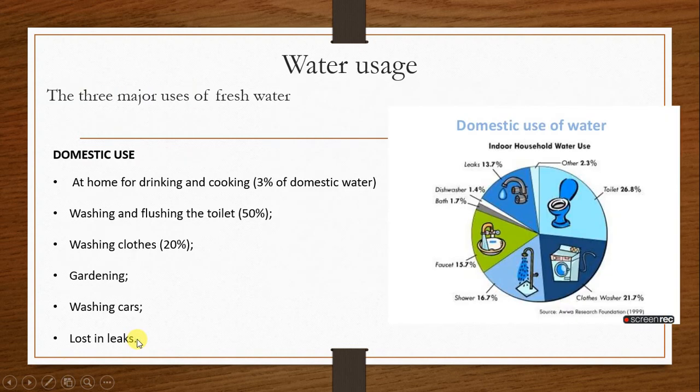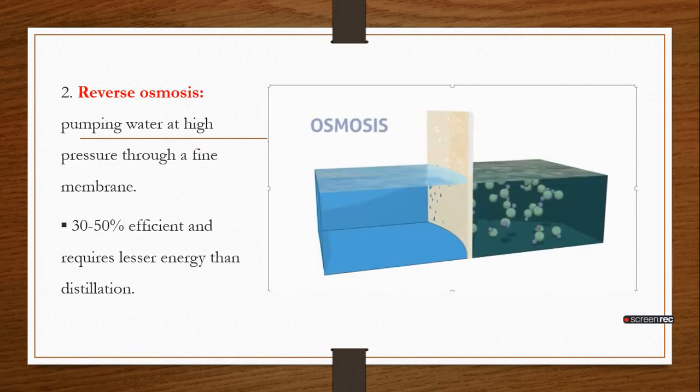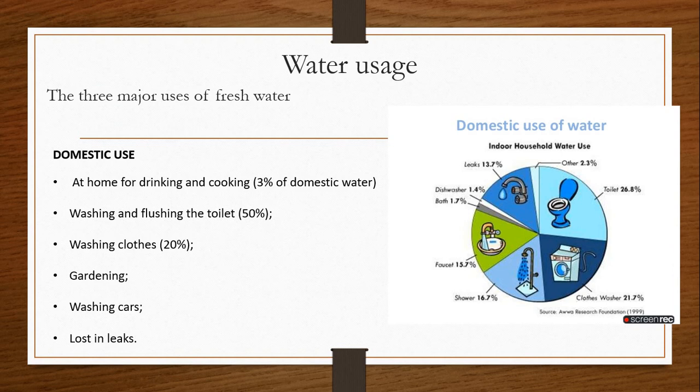Other sources of water supply include rainwater harvesting, where you place a container outside during rainfall to collect water. Boreholes are another source of water supply. Now, for water usage, there are three major ways in which fresh water is used: domestic use, industrial use, and agricultural use.